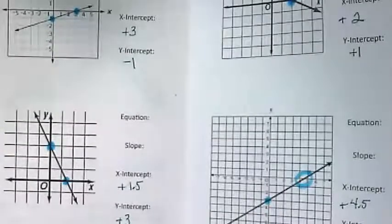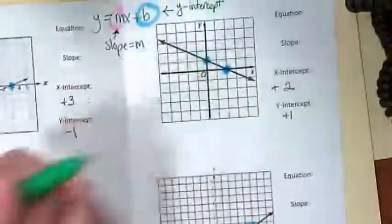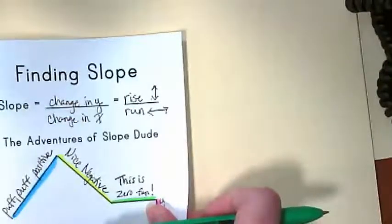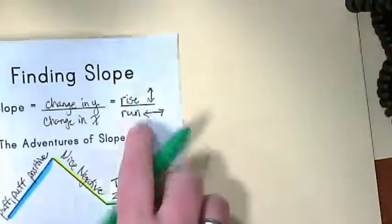All right, now we're going to move into finding slope. We talked a little bit about slope yesterday. On the cover of this, it's the change in y over the change in x, or we can think of it as rise over run.